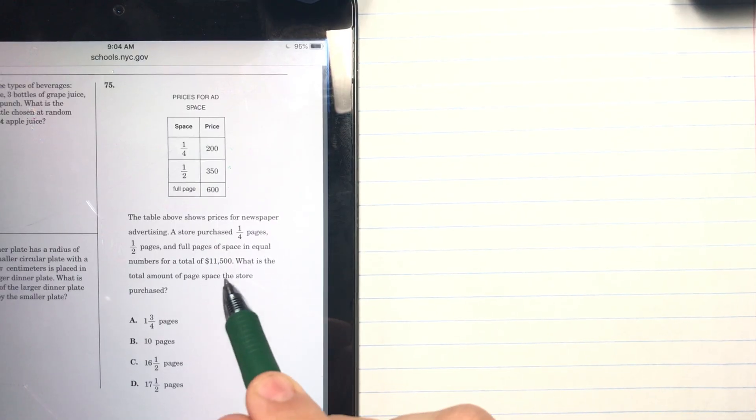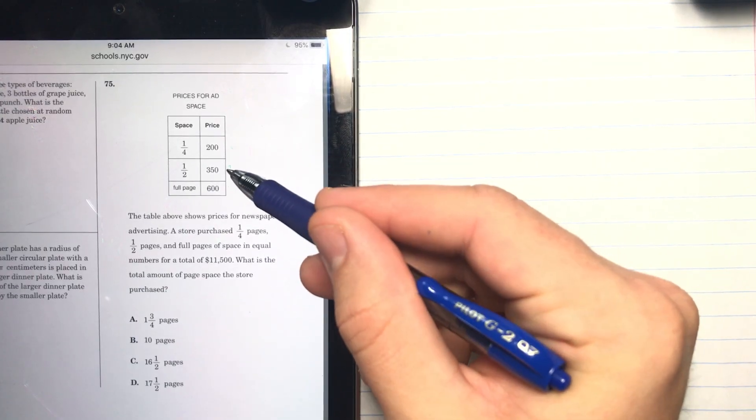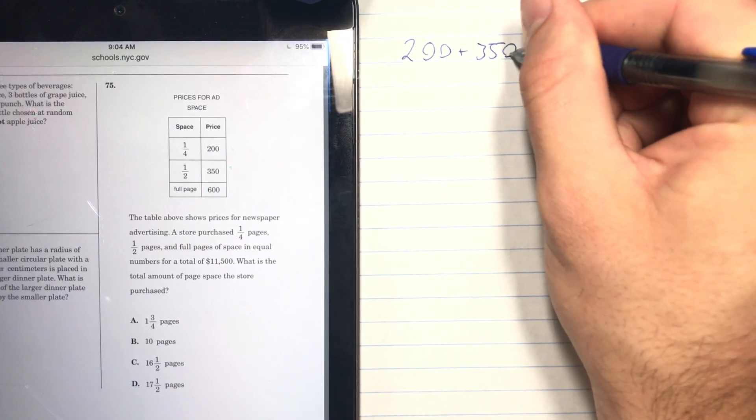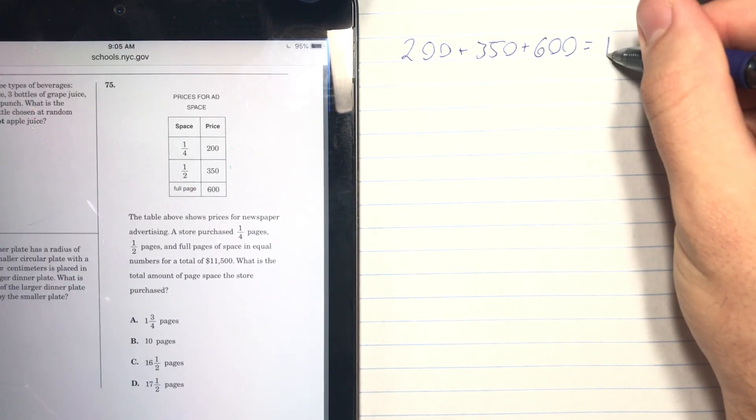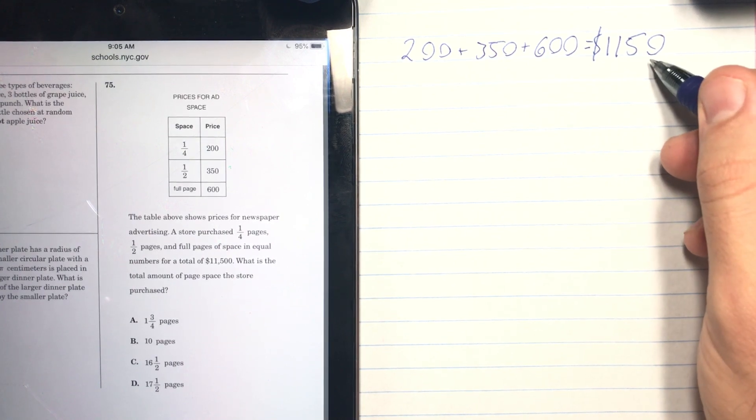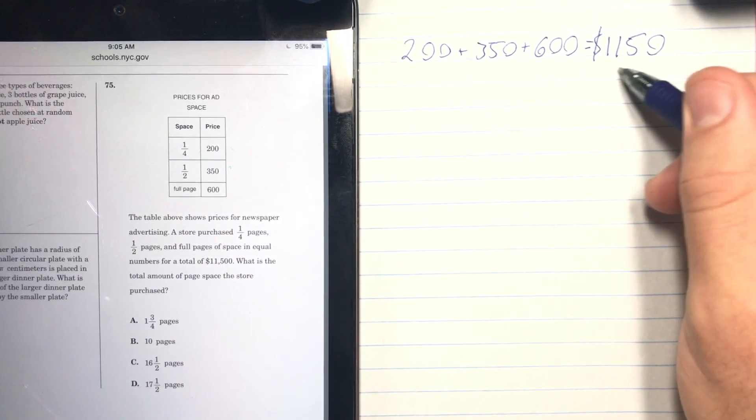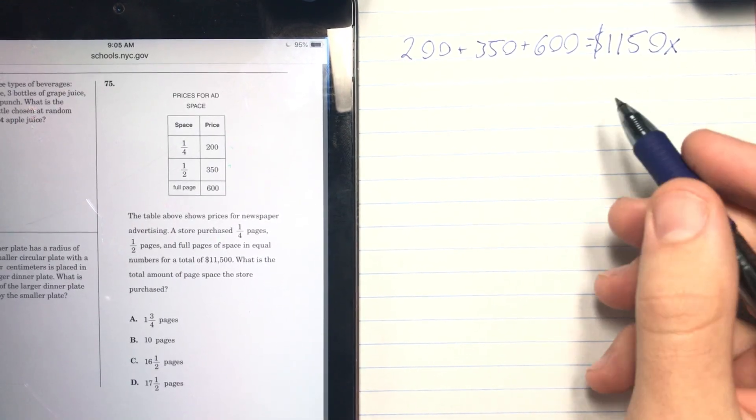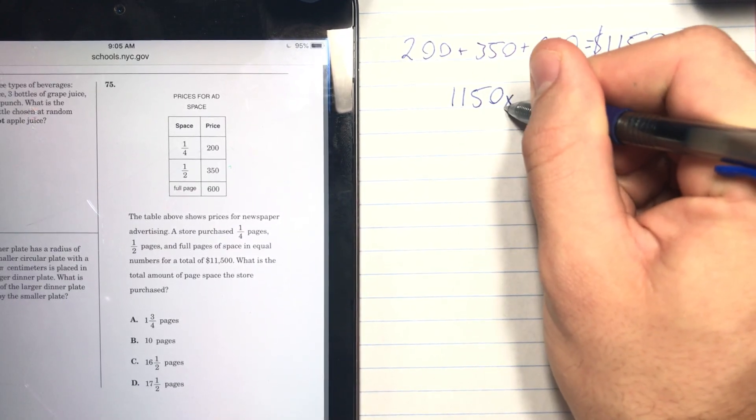That means they bought an equal number of these, these, and these. So the only information that we're given is the total amount of money they spent, so we can make an equation to find it. What if they bought one of each? They bought a $200, a $350, and a $600. That equals $1,150. So this is if they bought one, but we don't know how many they bought. That's why I'm going to multiply it by x, because we don't know how many of these they bought.